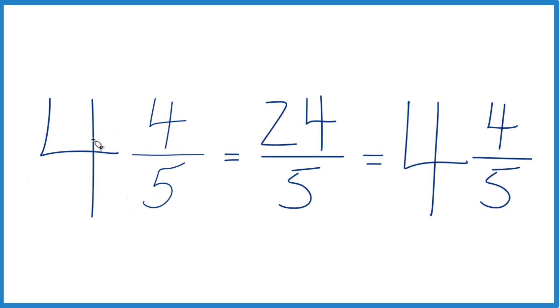That's the mixed number we started out with. And these numbers are equivalent. 4 and 4 fifths, that's equal to 24 fifths. They have the same value.